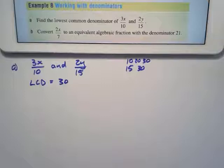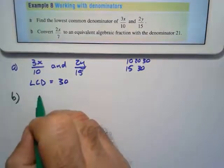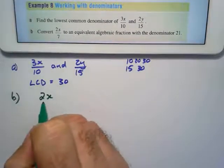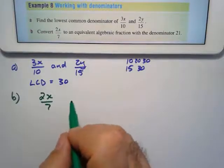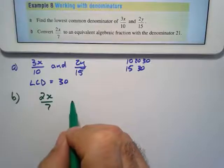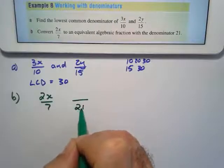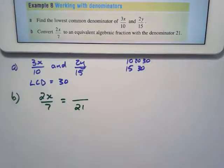If we look at B, they say convert 2x over 7 to an equivalent fraction with a denominator of 21. So we want to say this equals something over 21. So all I'm going to ask myself is,